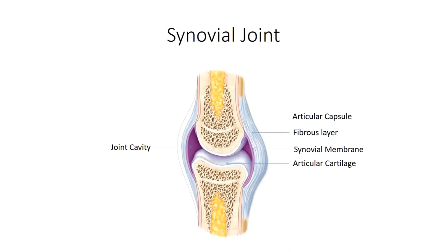Synovial fluid bathes and nourishes the articular surfaces and serves as a lubricant to further minimize friction. Synovial joints are typically reinforced by ligaments, which are made up of dense regular connective tissue. Ligaments can be either intrinsic or extrinsic. Intrinsic ligaments represent thickenings of the actual joint capsule — the medial and lateral collateral ligaments of the elbow would be good examples. Extrinsic ligaments are any reinforcing ligament that is not part of the joint capsule. In the knee, for example, while the medial collateral ligament is an intrinsic thickening of the joint capsule, the lateral collateral ligament is extrinsic, existing as an independent band.